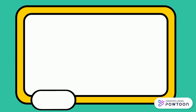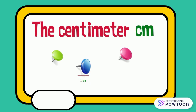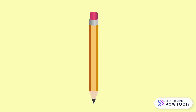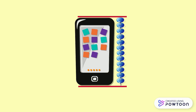We don't use meters to measure the length of small objects. We use the centimeter and it is represented by CM. The length of a pin is one centimeter. The pencil has the same length as 15 pins, so its length is 15 centimeters. The phone has the same length as 12 pins, so it is 12 centimeters.